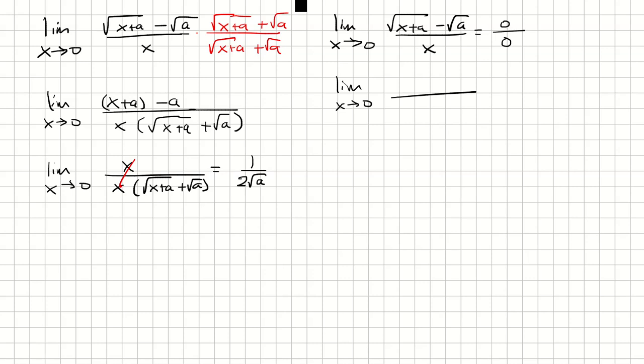The derivative of square root of x plus a is 1 over 2 times square root of x plus a. The derivative of square root of a is 0 and the derivative of x is 1. Now I plug in x equals 0 and end up with 1 over 2 square root of a as my limit.